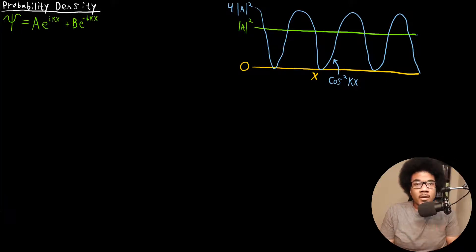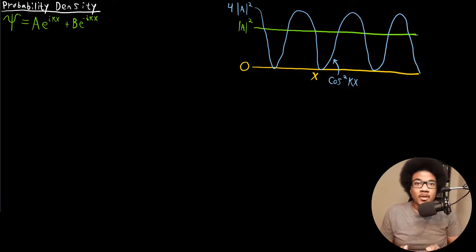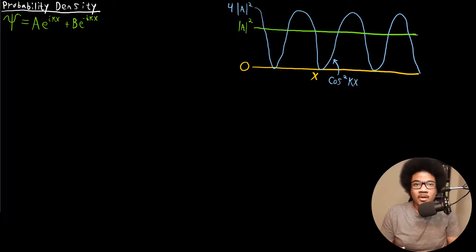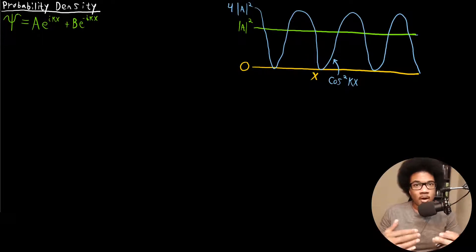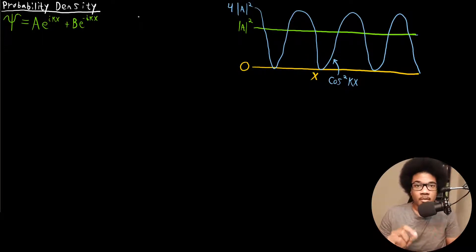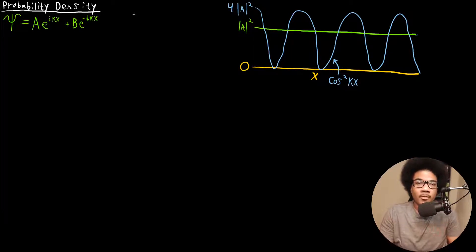In this video, we're going to look at additional features and properties of the probability density. We've already established that we can calculate the probability density using the square of the wave function for our given system.